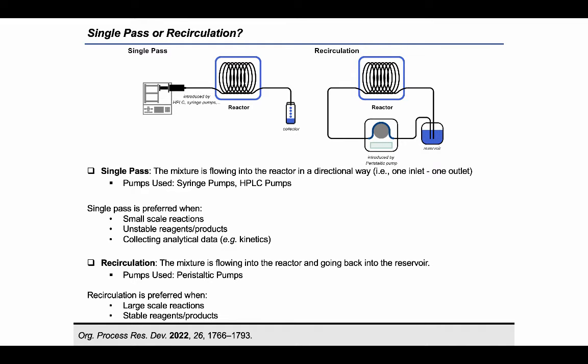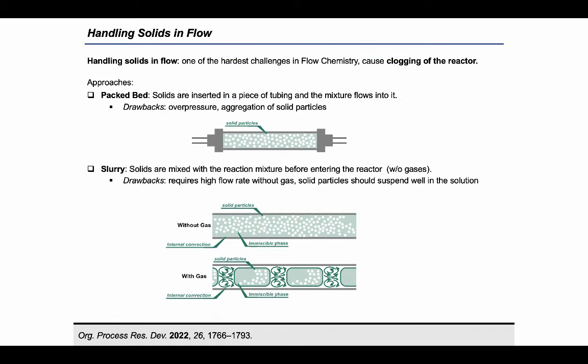In this way of conducting flow experiments, called recirculation mode, the feeding system of choice is a peristaltic pump and it finds its best application in scale-up experiments where usually starting materials and products are relatively stable.